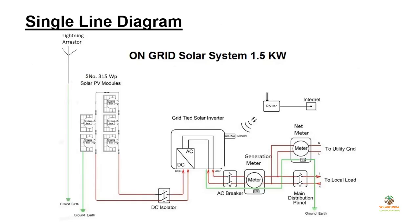Here is the single line diagram of my system, showing 5 numbers of 315-watt solar panels, followed by a DC-DB between the panels and a 1.5 kW grid-tie inverter, then an AC-DB after the inverter, a solar generation meter showing energy generated by the solar system, and finally the net meter. The AC connection also goes to the load through the main distribution panel. Earthing is shown by green lines to every component, there is a lightning arrester, and the inverter Wi-Fi is wirelessly connected to the home internet for remote monitoring of the solar system on a mobile phone or laptop.